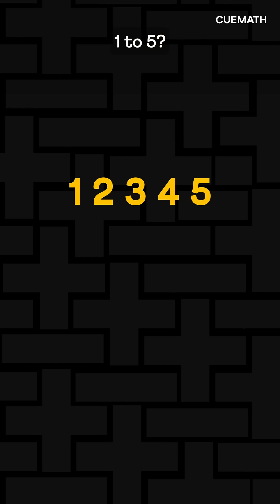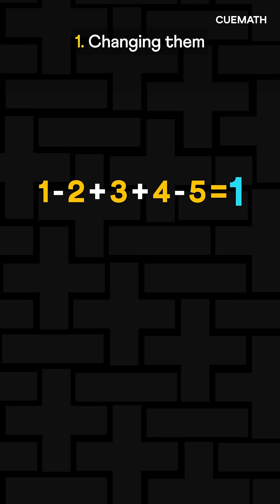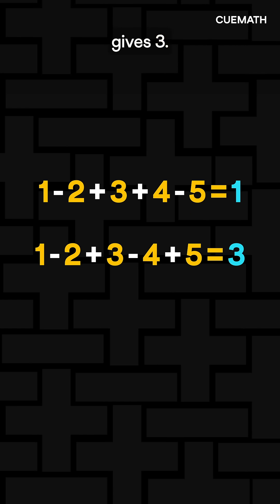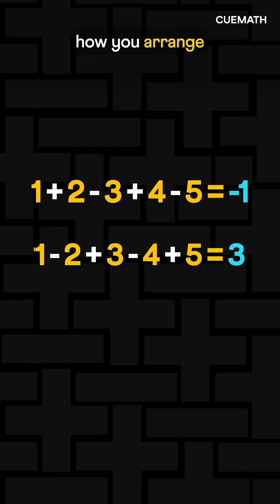Can we do the same with 1 to 5? Placing the signs like this gives 1. Changing them gives 3. Turns out it's impossible, no matter how you arrange the signs.